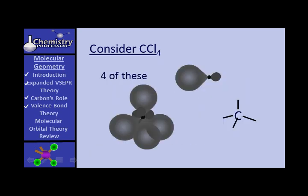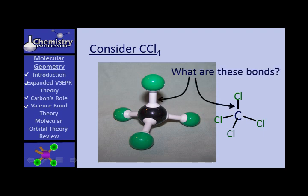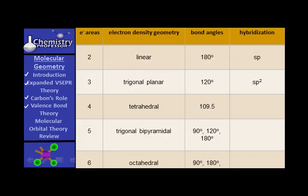The four SP3 hybrids are bonded together at the four points of a tetrahedron, and the molecular model looks tetrahedral. The bonds are equivalent — sigma bonds formed by the overlap of the SP3 hybrid of carbon with the unhybridized P from chlorine. When we fill in the chart, we put SP3 as the hybrid orbital.